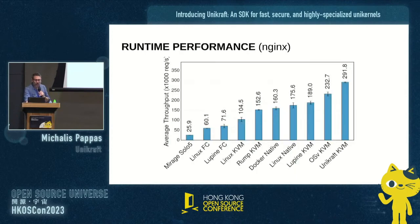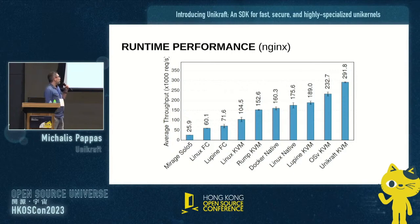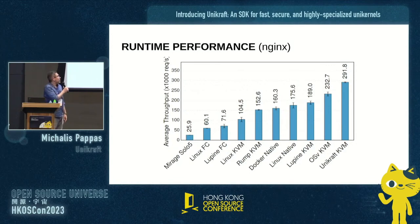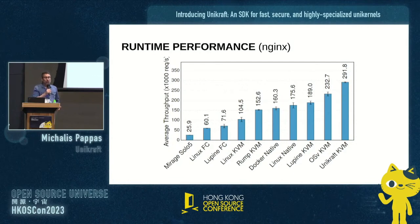When it comes to performance, you can see a comparison of Unikraft with Nginx compared to other systems. This is the throughput — the number of requests per second we can handle. Unikraft does the best: 80-82% better than Docker and three times faster than Linux on KVM.